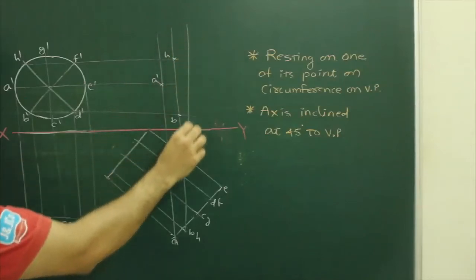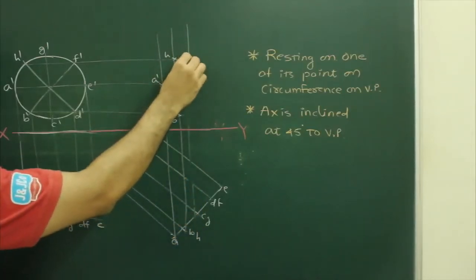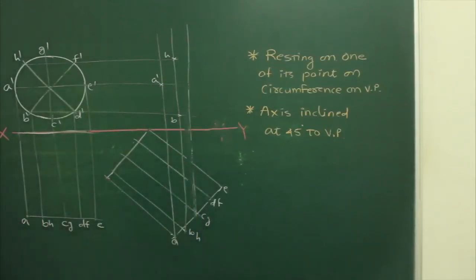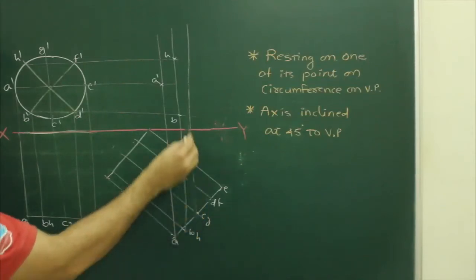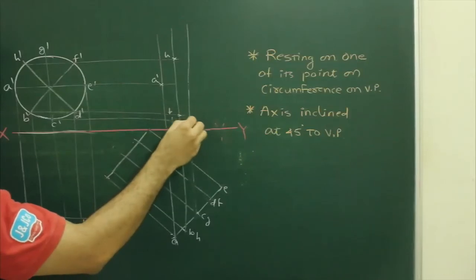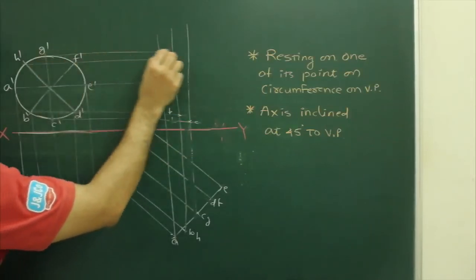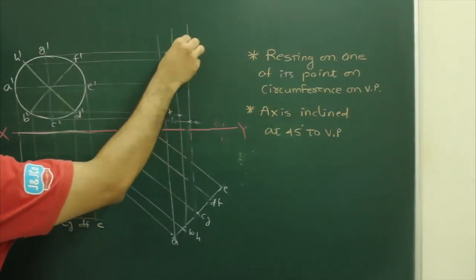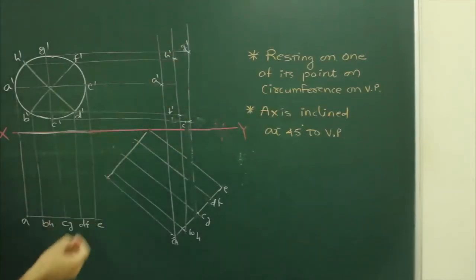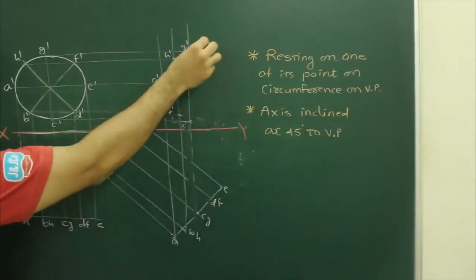Then C from here and G from here. So we get C dash as well as G dash. Then we project D and F.